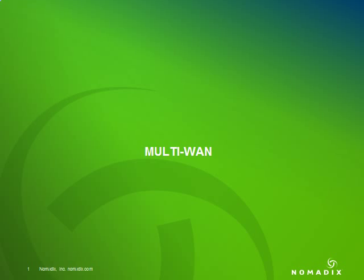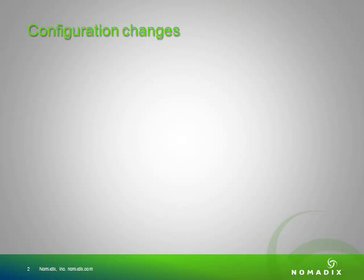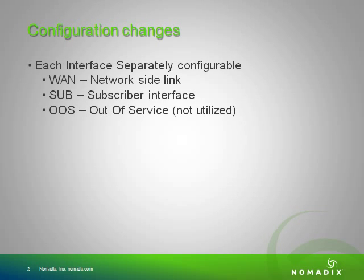We will first discuss multi-WAN. There have been some configuration changes for the multi-WAN interface to support the new features. The major change is that each interface, each ethernet port, is now separately configurable. It can either be the WAN link, the subscriber link, or out of service. If it is the WAN link, this would be the link that connects to an ISP and allows for a separate internet connection for any of the ethernet ports.